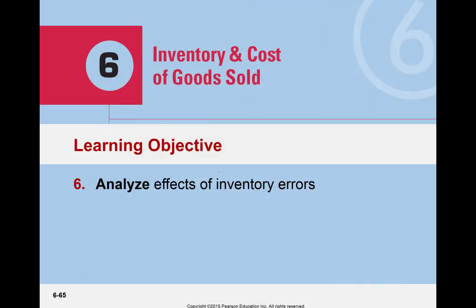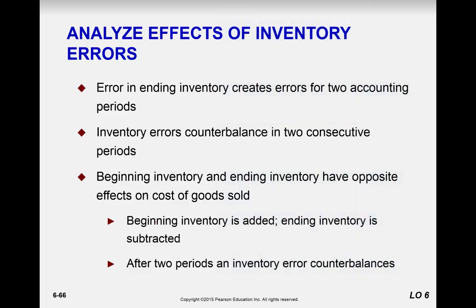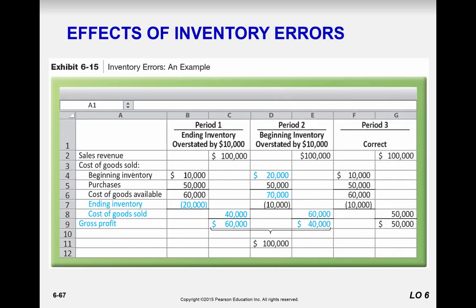Our last learning objective is to analyze the effects of inventory errors. The easiest approach on an exam is to use numbers. An error in ending inventory creates errors for two accounting periods, because the ending balance carries forward into the next period's beginning balance. Inventory errors can counterbalance over two consecutive periods, and beginning and ending inventory have opposite effects on cost of goods sold — beginning inventory is added, ending inventory is subtracted.